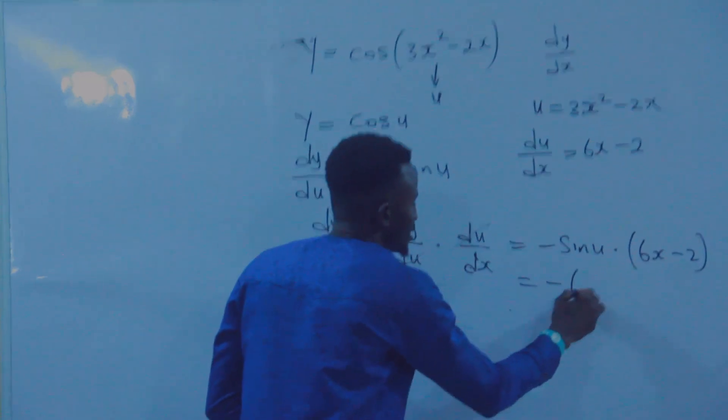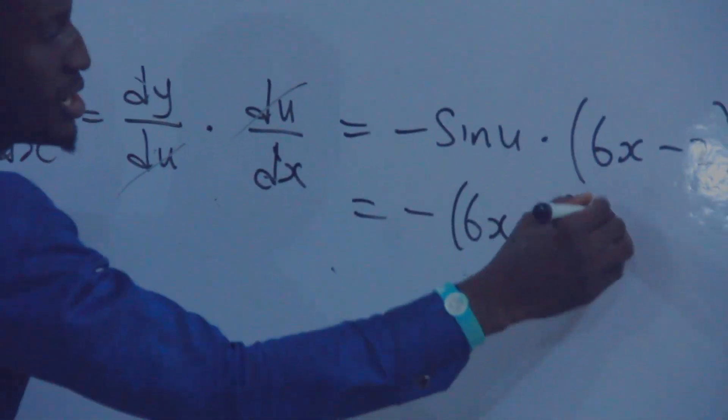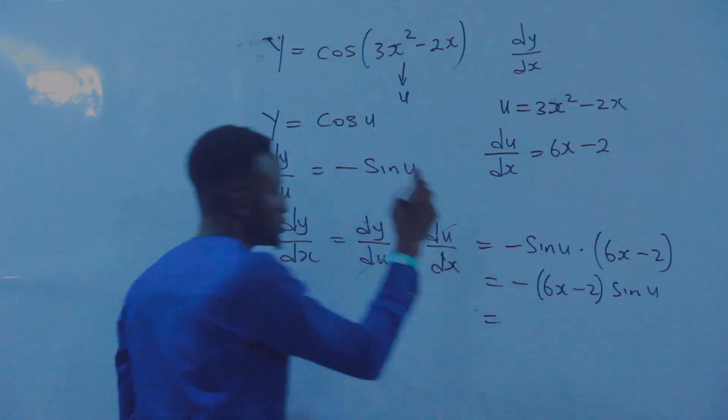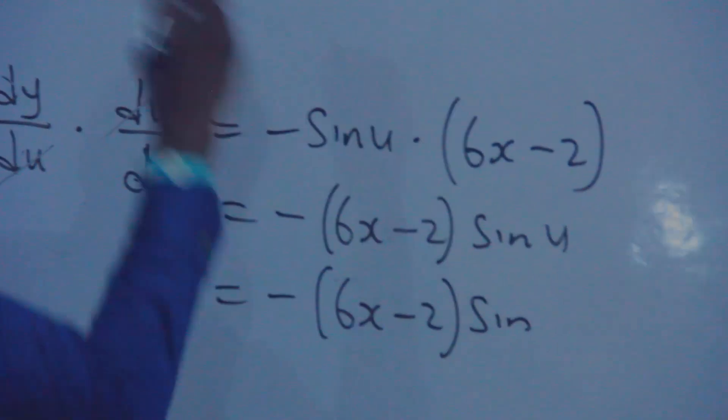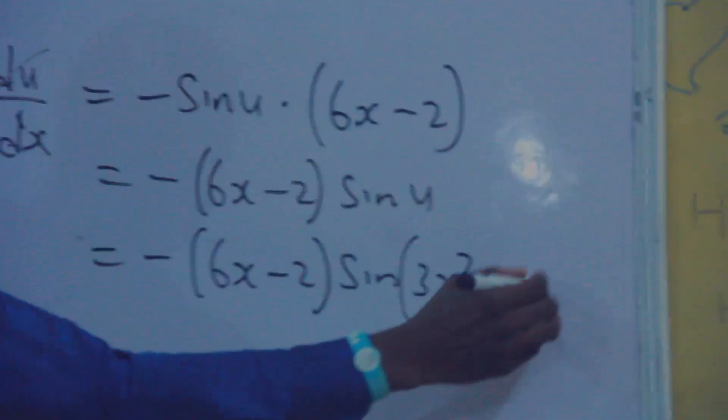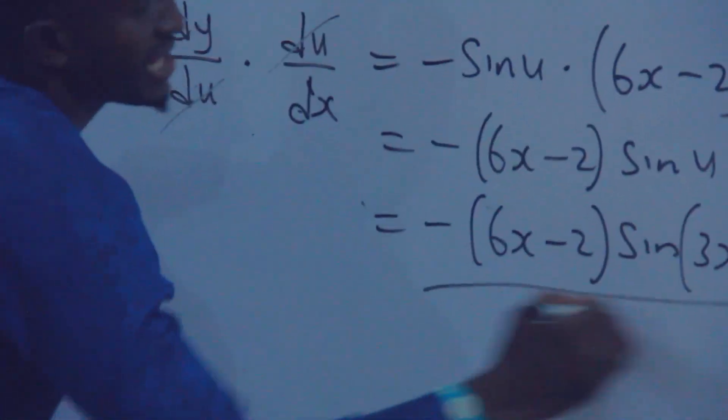Then if you open this bracket, you have minus, in this bracket, 6X minus 2, sine U. Now let us substitute the value of U back. Don't forget, this is our U, which means we have minus, in this bracket, 6X minus 2, sine 3X squared minus 2X. This is the final answer.